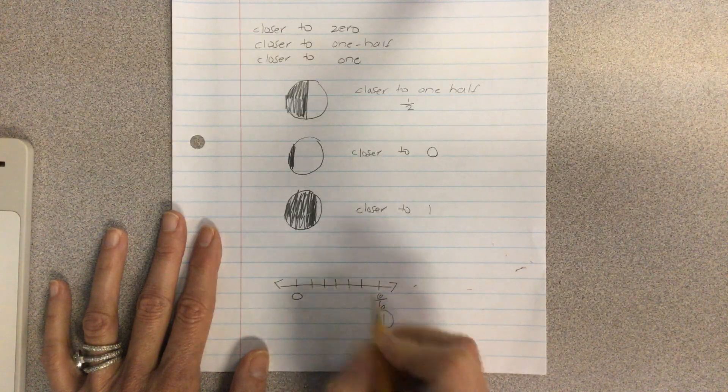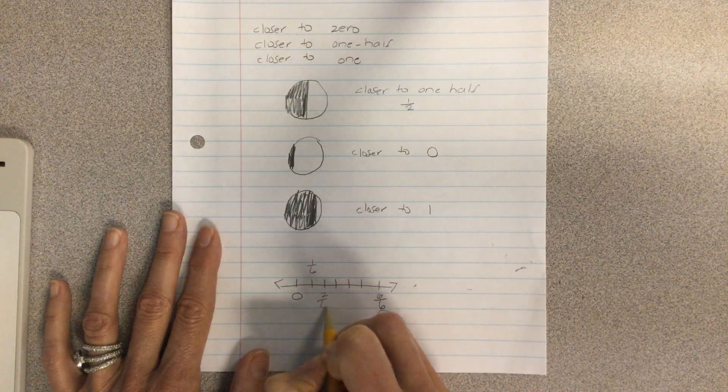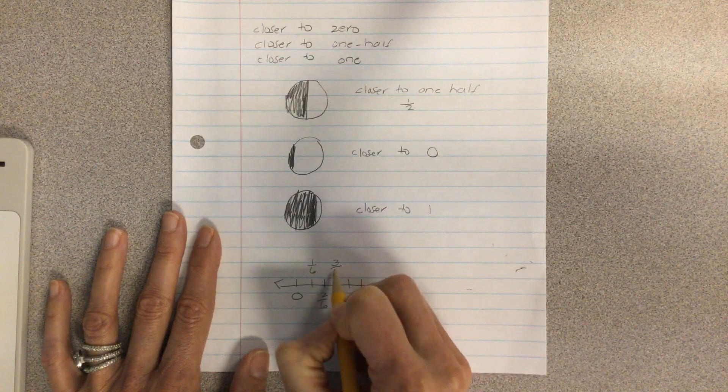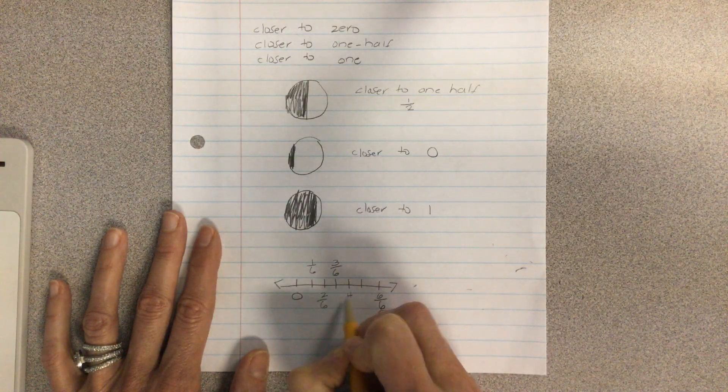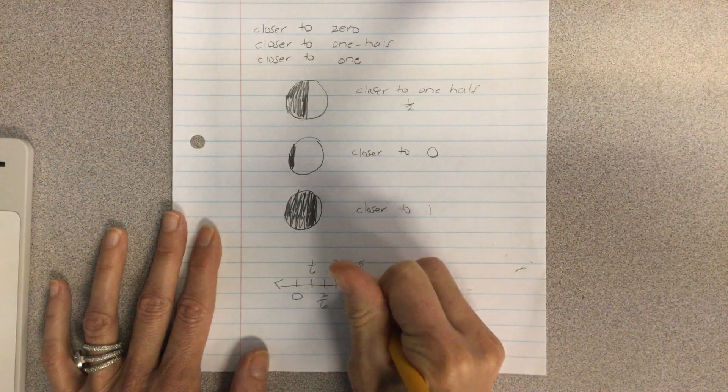And then this will be one sixth. And I like to write them down this way so I can just see them. They have enough space. Two sixths, three sixths, four sixths, five sixths.